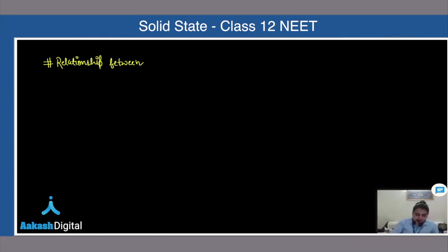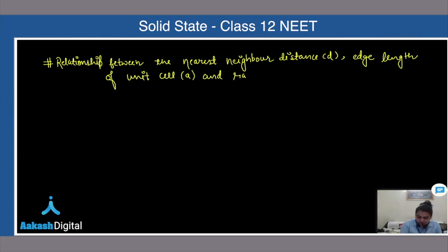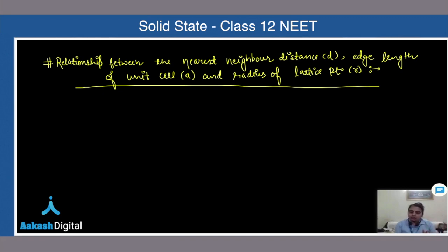We will study the relationship between the nearest neighboring distance d, the edge length of the unit cell a, and the radius r of the lattice point. We will see the relationship between d, a, and r. First, let us understand what d, r, and a are — I will show you this by a diagram.